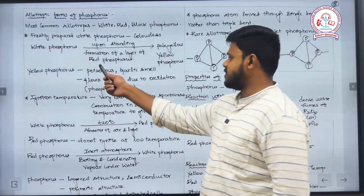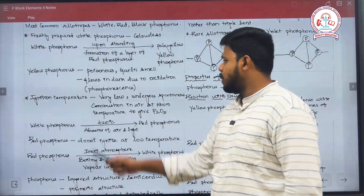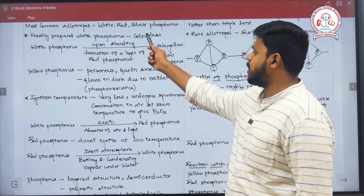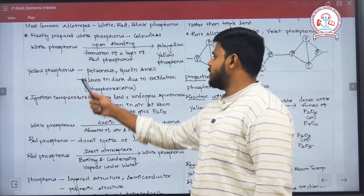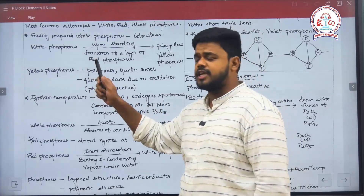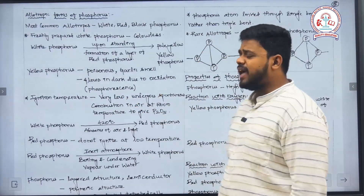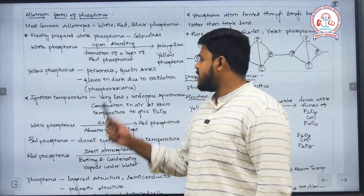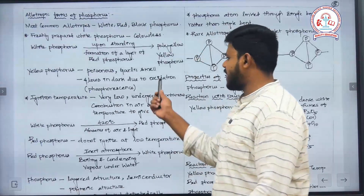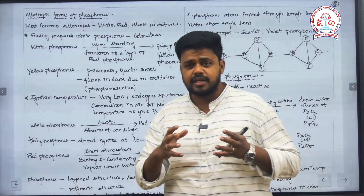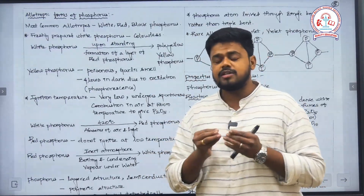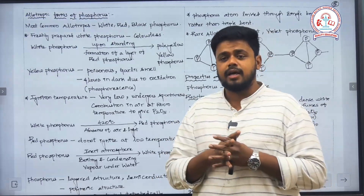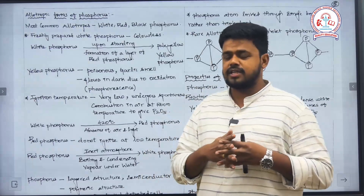This yellow phosphorus is non-poisonous, whereas white phosphorus is poisonous. The smell of yellow phosphorus is a garlic smell. This phosphorus has an ability to glow in the dark due to the character called phosphorescence, which means it undergoes oxidation. Because it has a tendency to undergo oxidation, it has an ability to glow in the dark because of the reaction called oxidation.